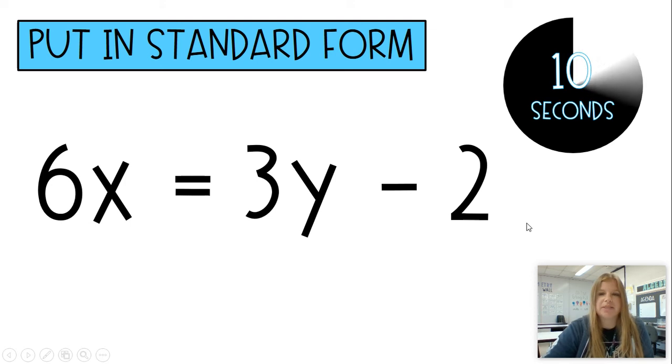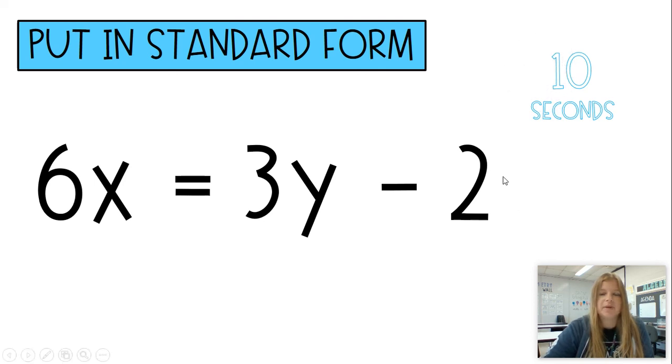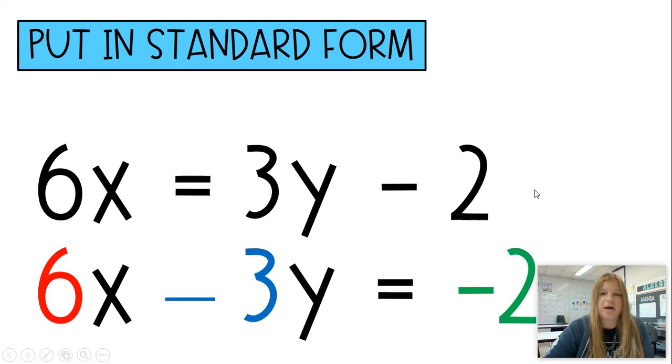6X equals 3Y minus 2. Which is a nice one step. All we have to do here is subtract 3Y. So it's 6X minus 3Y equals negative 2.